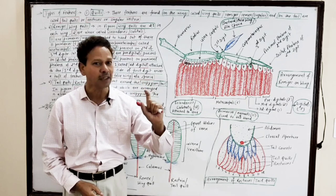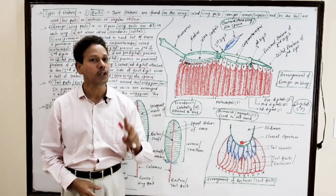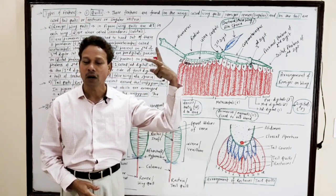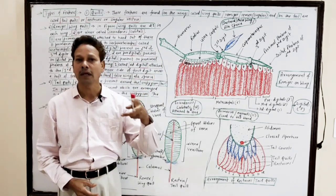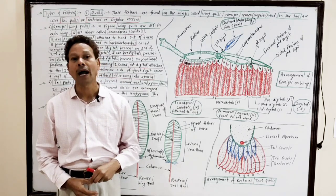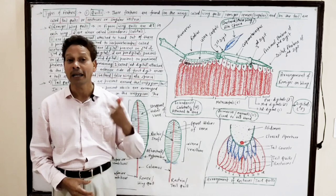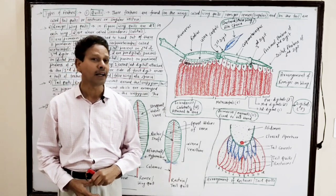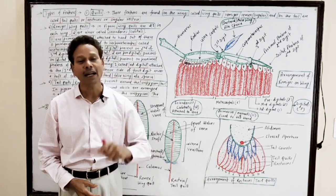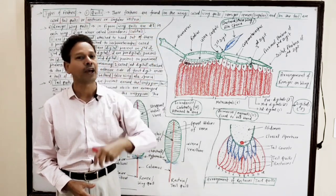The exoskeleton of pigeon consists of four exoskeletal structures: the ramputheka of the beak, claws present on toes of the hind limb, scales which are again present on hind limbs, and the fourth one — feathers, which are very important for all higher studies.